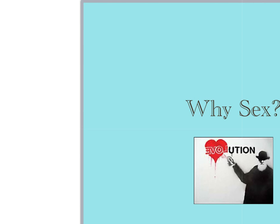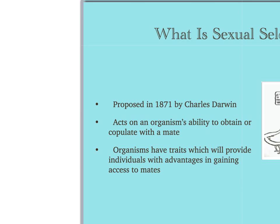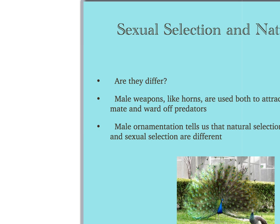Why sex? To reproduce — this form of reproduction has been around for over a billion years. Charles Darwin first suggested sexual selection, noting that organisms have traits that provide advantages in gaining access to mates, and that animals need to compete with others of the same species for a chance to mate. Male weapons like horns are used both to attract mates and to ward off predators, and the male orientation tells us that natural selection and sexual selection are different.